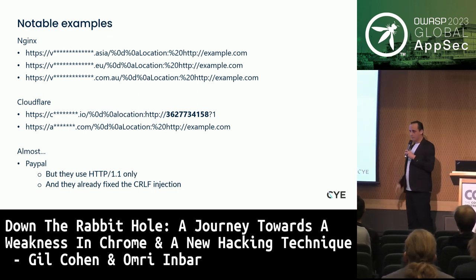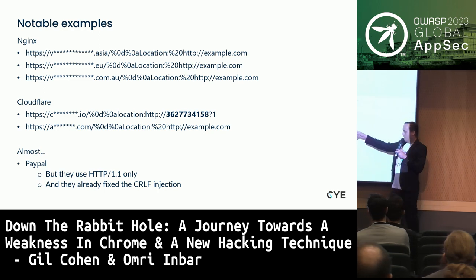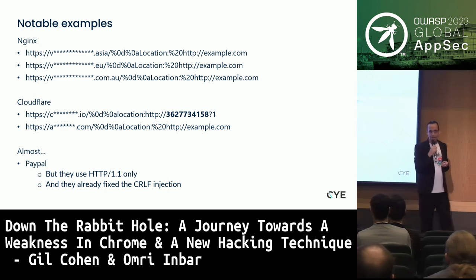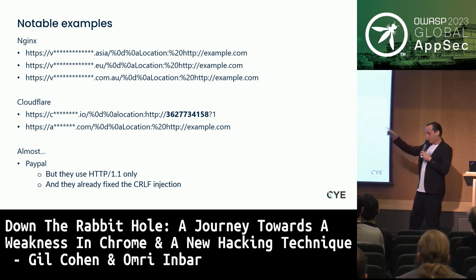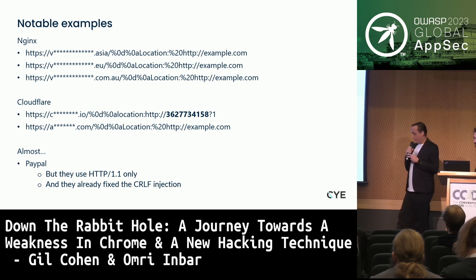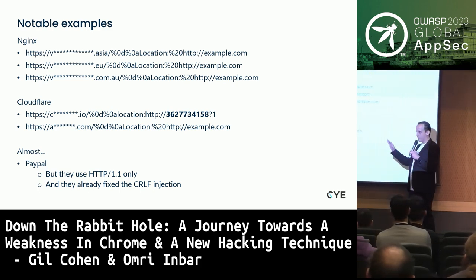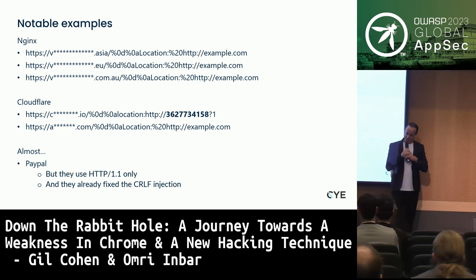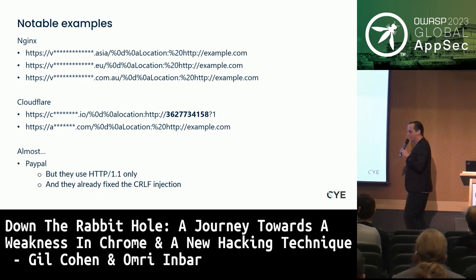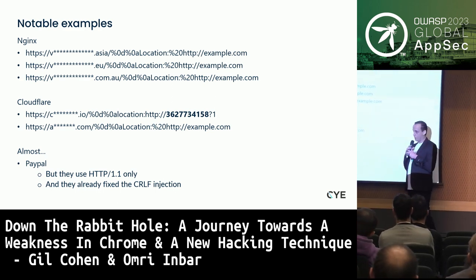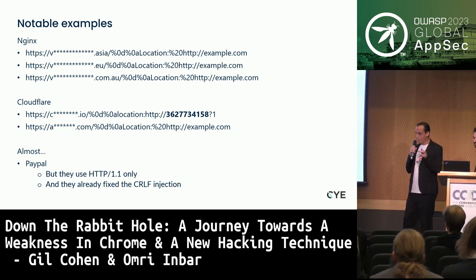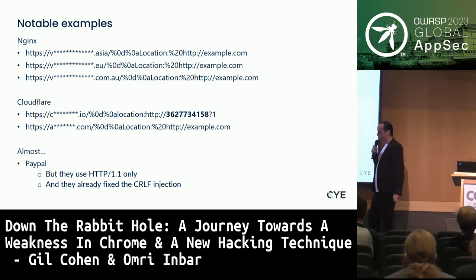One notable site didn't allow redirects to addresses containing dots, so we used an IP address obfuscation technique — octet encoding — which represents a valid IP address without dots. PayPal was still vulnerable to CRLF injection but only used HTTP/1.1. By the time we finished the research, they had already fixed it — they probably monitored their logs, saw us injecting CRLF in www.paypal.com, and fixed it during the research.